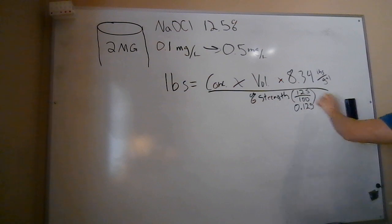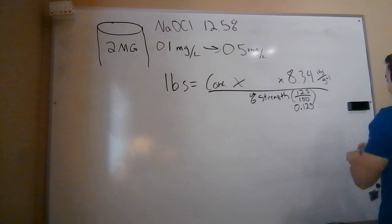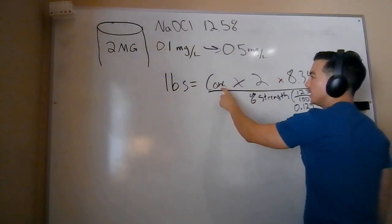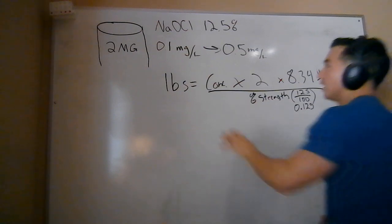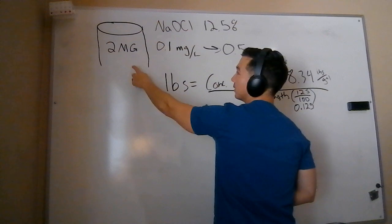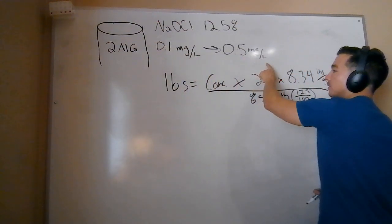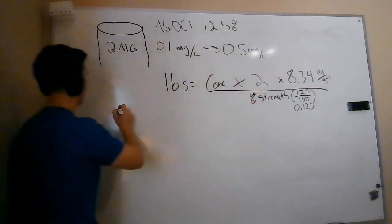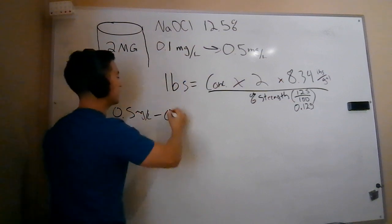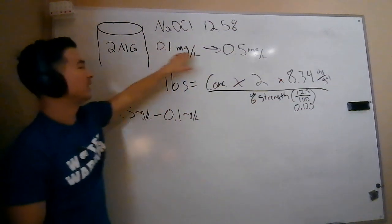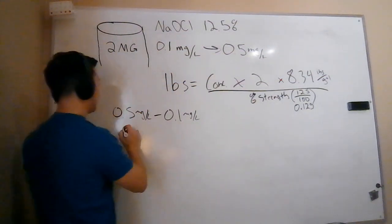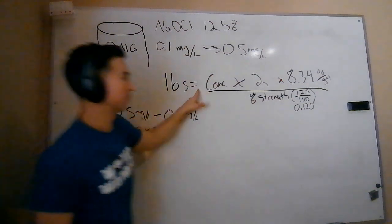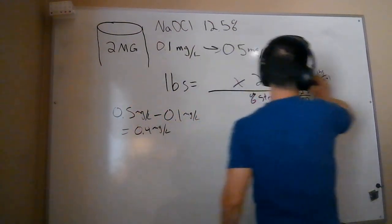So let's fill in the rest of this. The volume is directly given — 2 million gallons. That's the capacity, and we're assuming it's full. We know the weight of water, and we've got our percent strength. The only thing we need now is the concentration. You've got to think about it logically: if I take a reading and I've got 0.1 milligrams per liter in my tank, and I want to bring it up to 0.5 milligrams per liter, then what is my additional concentration? That's going to be 0.5 milligrams per liter minus 0.1 milligrams per liter. Think of 0.1 as what we have and 0.5 as what we want to get to. So what do I need to add? I need to add 0.4 milligrams per liter. That's the concentration we're going to plug in.